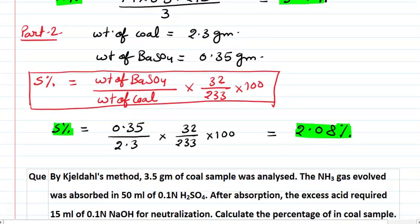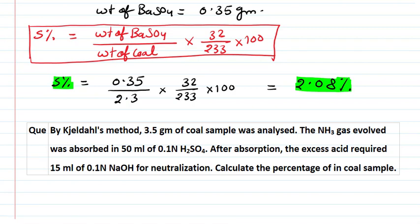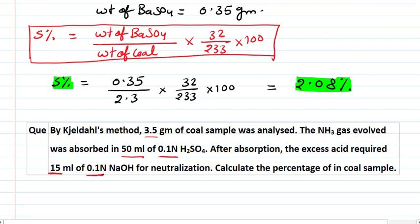For your practice, I have mentioned one more numerical here where you have to calculate the nitrogen percentage. Please try to solve it on your own and write your answer in the description box so I can check if it is correct or not. In this question: by the Zeldol method, 3.5 grams of coal sample is given. The ammonia gas evolved was absorbed in 50 mL of sulfuric acid with normality 0.1N. The excess acid was neutralized using 15 mL of 0.1N NaOH.